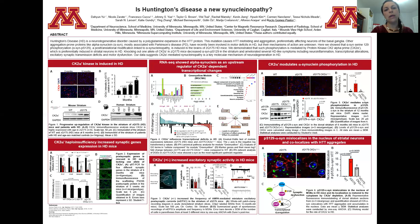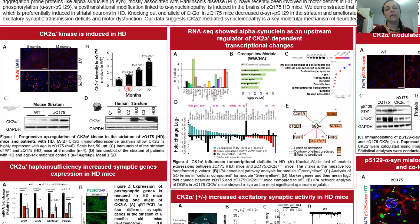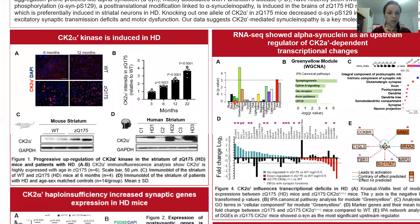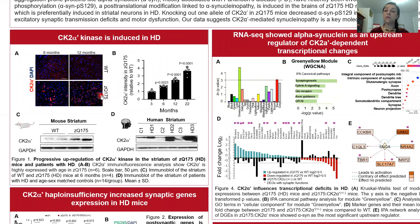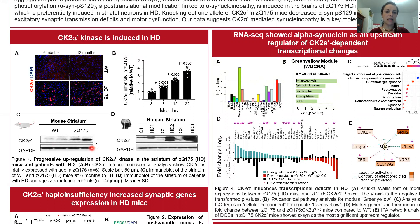In figure one, we are showing how this kinase that we've been working with for quite a long time is induced in Huntington's brains — in particular, in the brains of a mouse model called zQ175 — induced progressively over time, as we can see in this graph. We have shown that CK2 alpha prime is connected to pathways related to protein aggregation, protein misfolding, and chaperone expression. Not only is it induced in the brains of these mice, but it's also induced in post-mortem samples of patients with Huntington's.